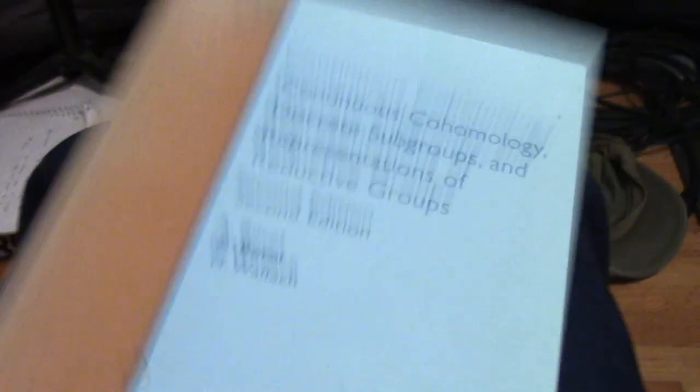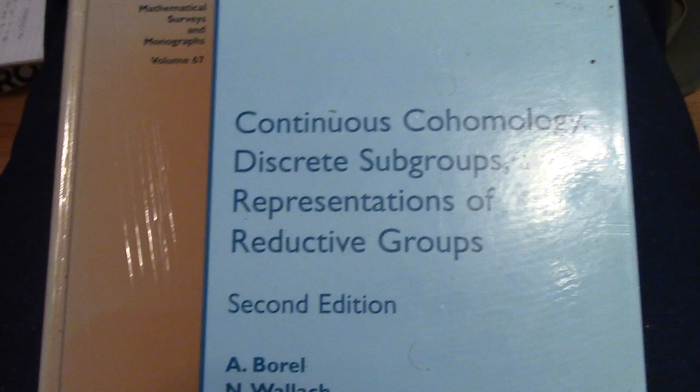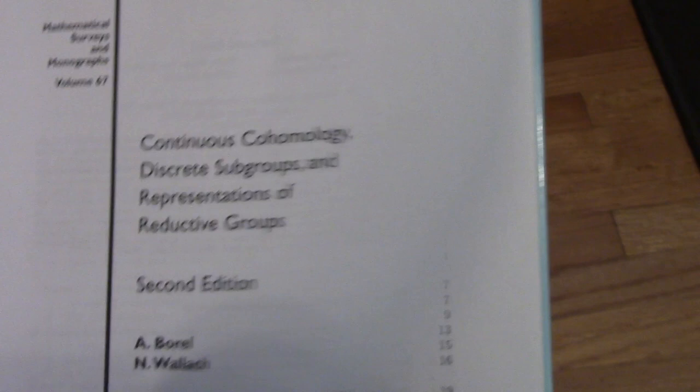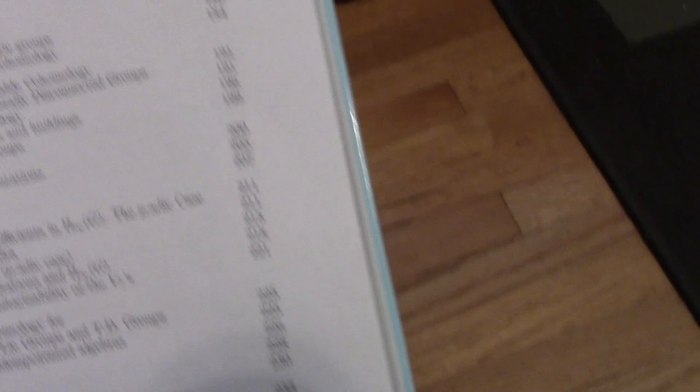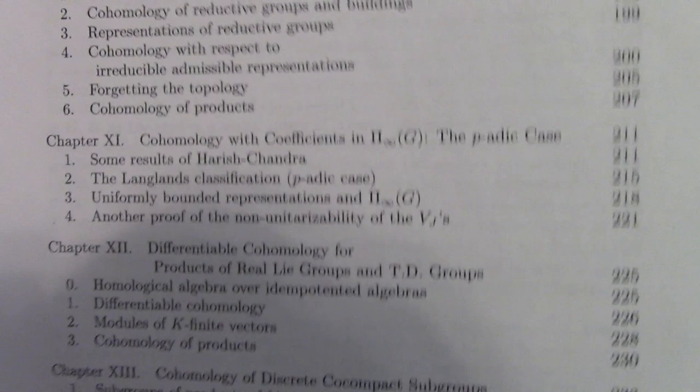I'll do one more book and keep on the Langlands train for now. I promise I have other books other people will be interested in — I'll talk about those in future episodes. I've got this out from the library: Continuous Cohomology, Discrete Subgroups, and Representations of Reductive Groups by Borel and Wallach. It's about cohomology of groups and representations. Most of this I haven't read to be honest — I'm more interested in Chapter 11, the p-adic case, since I'm doing p-adic Langlands type stuff, meaning complex representations of p-adic groups.